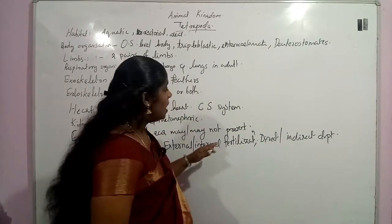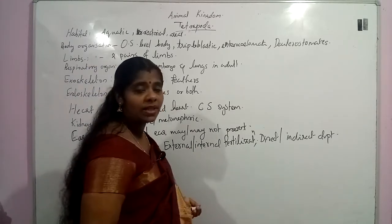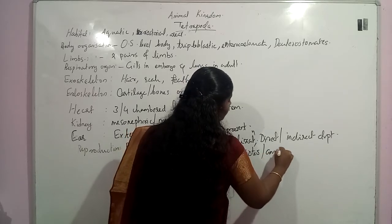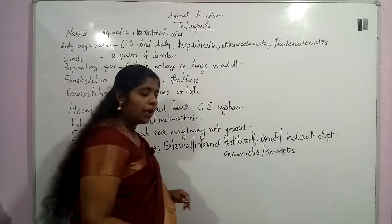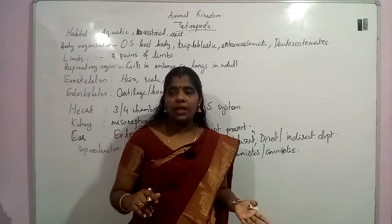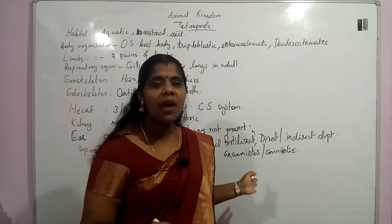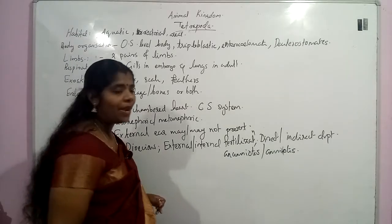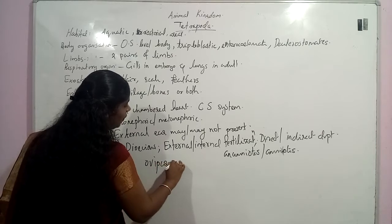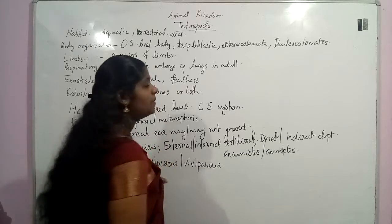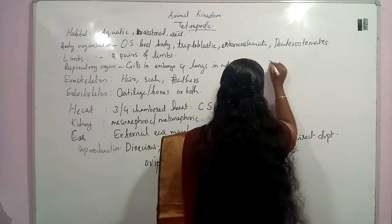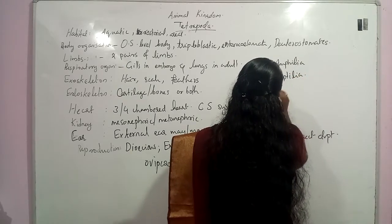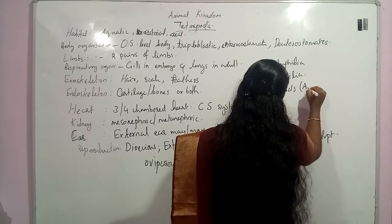This organism will be amniotes as well as anamniotes. The embryonic membranes are chorion, amnion, yolk sac, and allantois. Most of them are amniotes in this group. They may be oviparous or viviparous. This organism is classified into four different classes: Amphibia, Reptilia, birds (Aves), and Mammals.